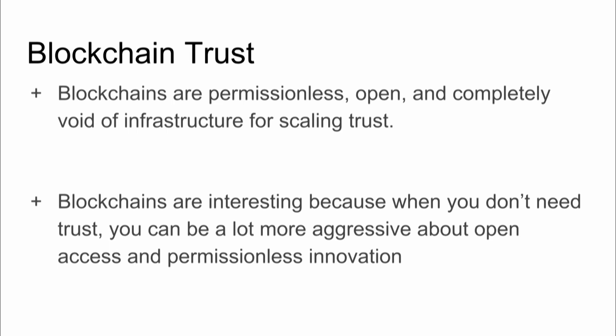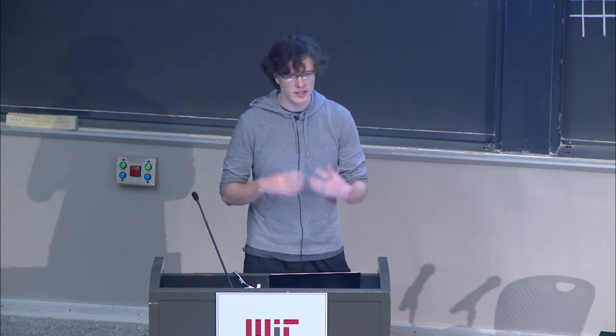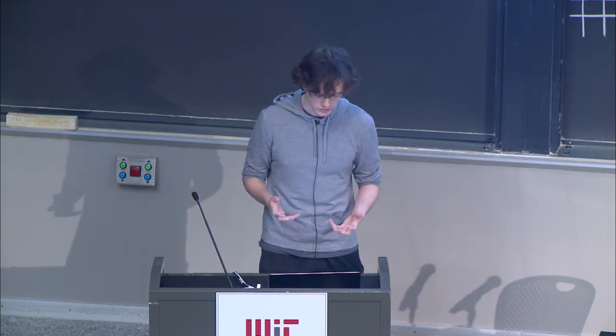The real advantage of blockchains is that we can throw out all of this trust infrastructure and still have something that's mostly stable. But it also means that because blockchains don't have any trust infrastructure, your general intuitions about what you can trust are probably a little too optimistic. The number of things that can go wrong is a lot more, and I don't think we as a society have adjusted our common sense to understand the types of attacks available in blockchain environments.